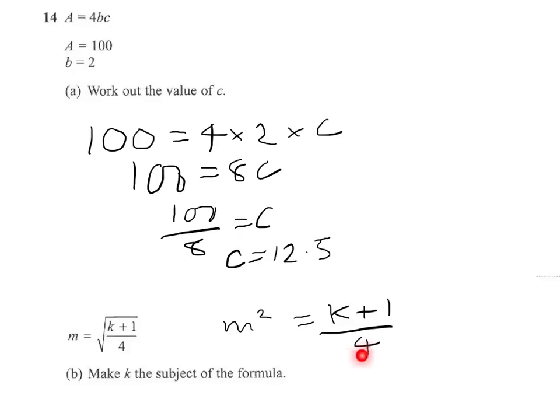We'll now move that 4 across to the other side, and that will give me 4m squared equals k plus 1. So I've almost got k as the subject. We'll now take the 1.